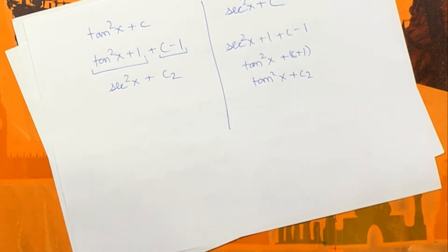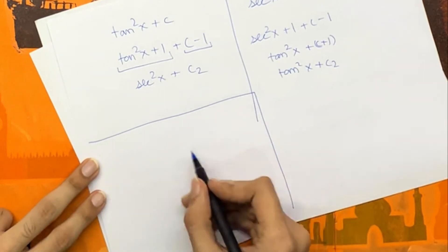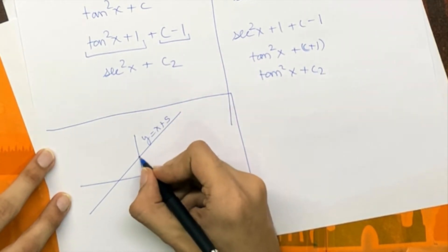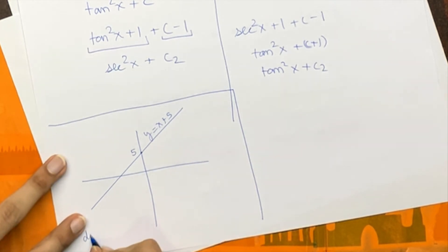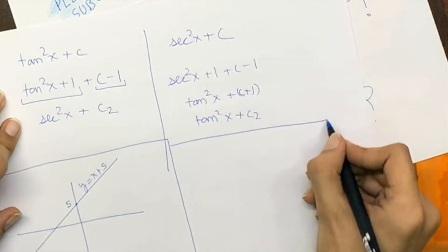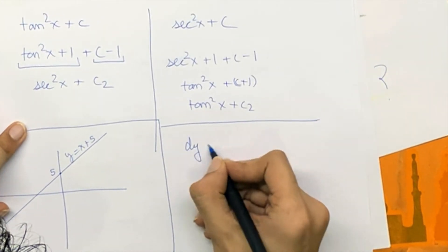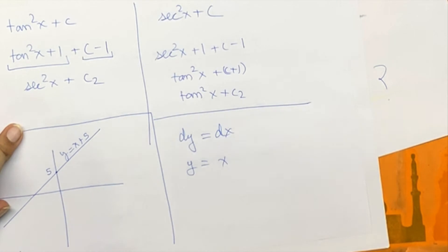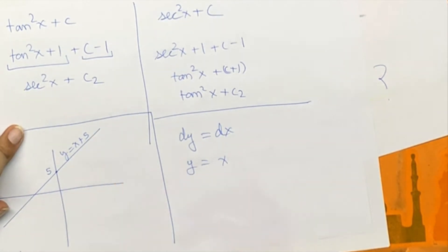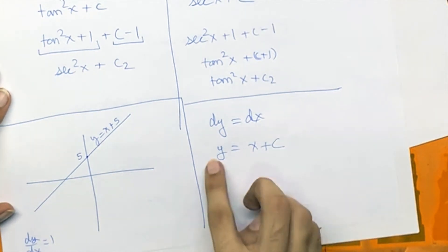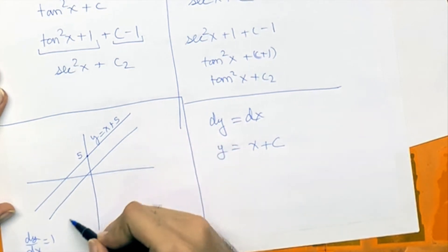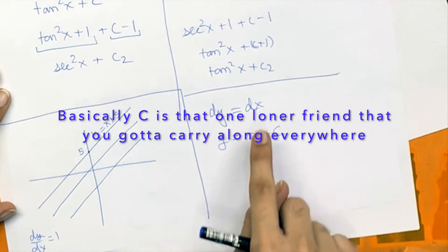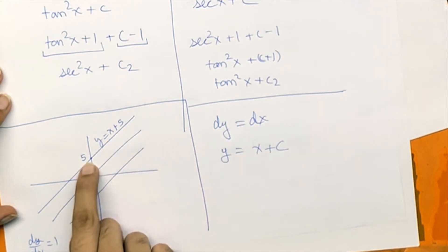Let me explain this using graphs. Consider y = x + 5. The slope of this line is 1, so dy/dx = 1, which gives dy = dx. Integrating both sides without a constant gives y = x — which is not our original line. If we include +C, we get a family of lines with the same slope but different y-intercepts. That's why we need +C: integrating the derivative only recovers the slope, not the y-intercept.